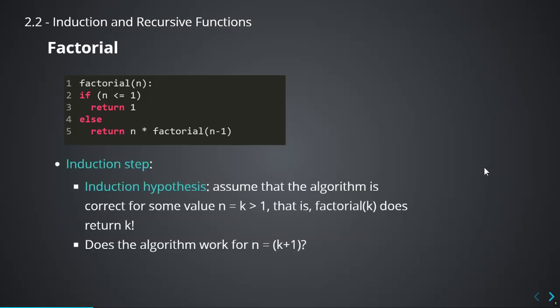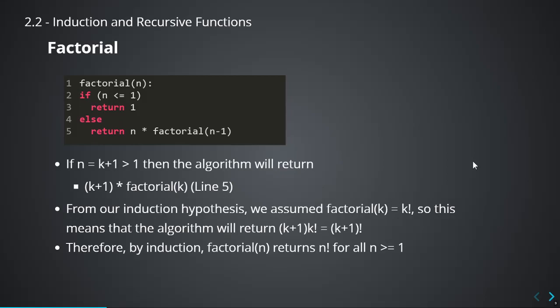Next we go to the induction step. Our hypothesis is that the algorithm is correct for some value k greater than 1 — meaning we assume that factorial(k) does return k factorial. We don't know if this is true, but we just assume it is. What we have to do now is show that the algorithm is also correct for k plus 1. When n equals k plus 1, we go to line 5, where we compute (k+1) times factorial(k). We assume factorial(k) gives us k factorial, so line 5 gives us (k+1) times k factorial — and that is the definition of (k+1) factorial.